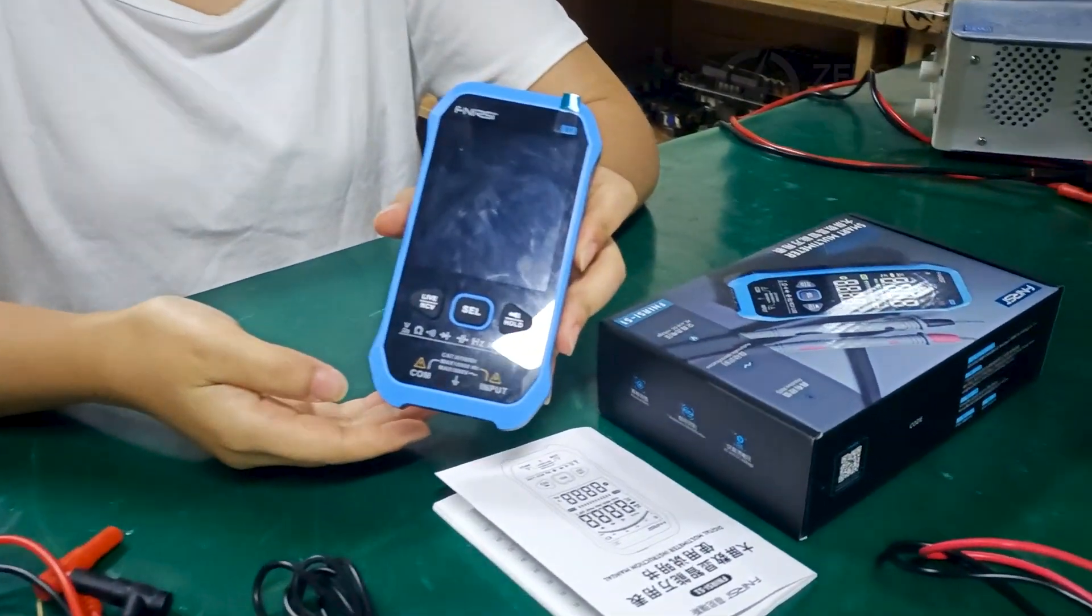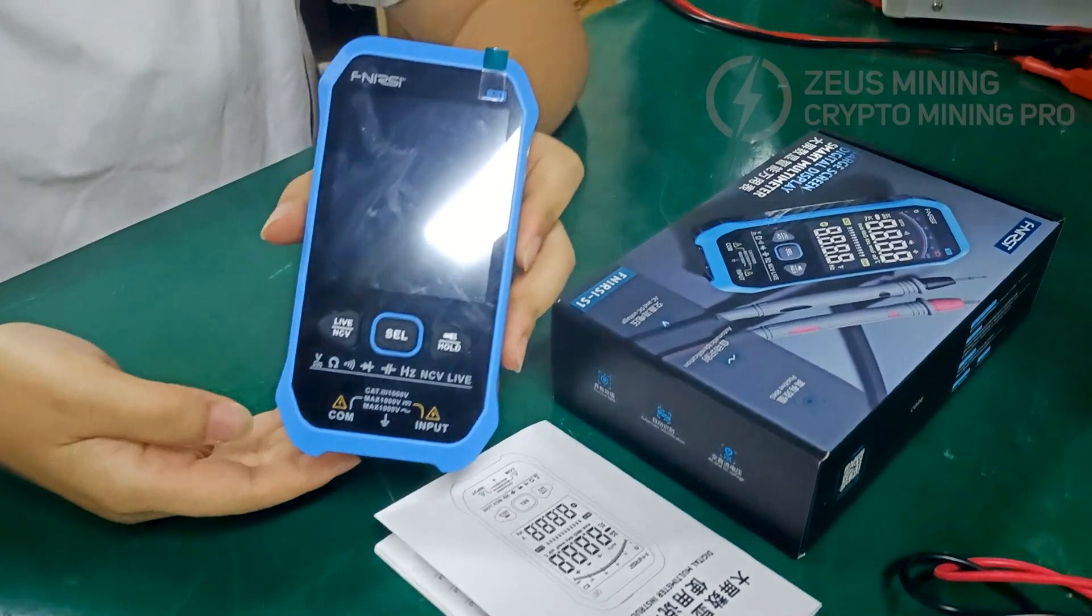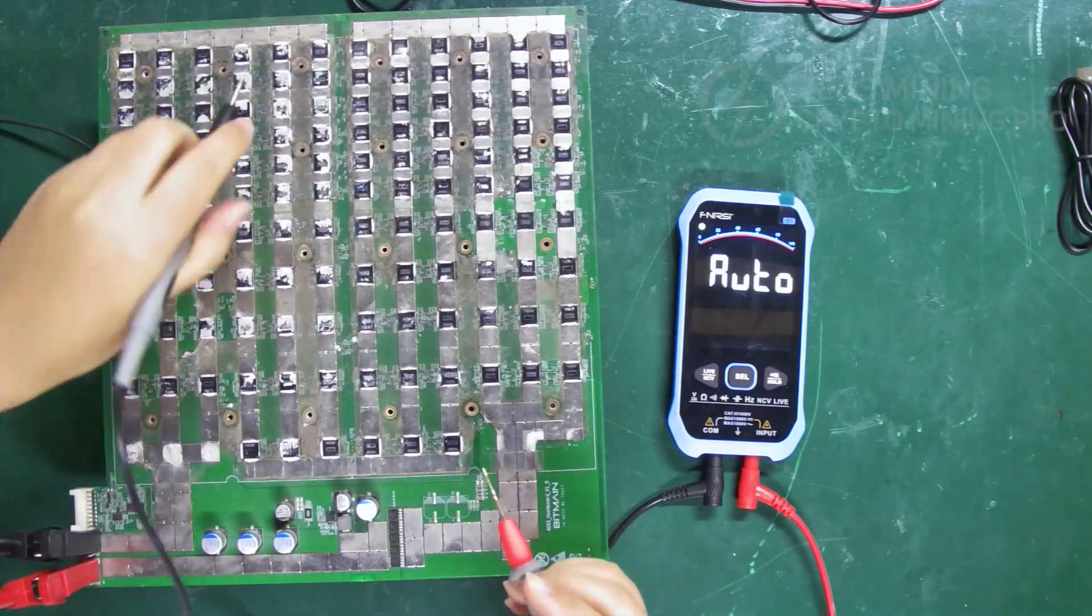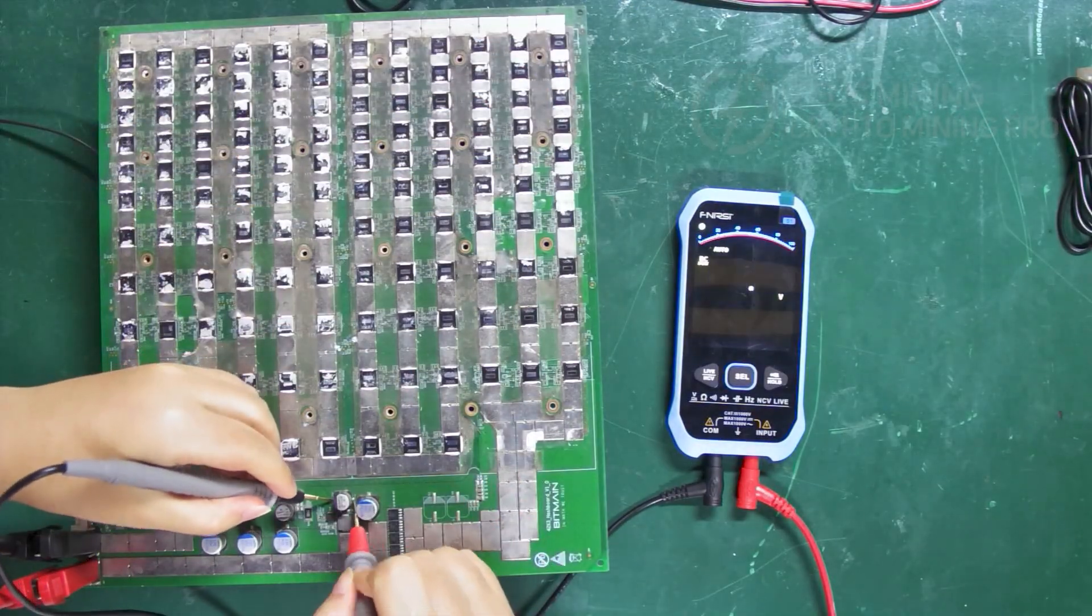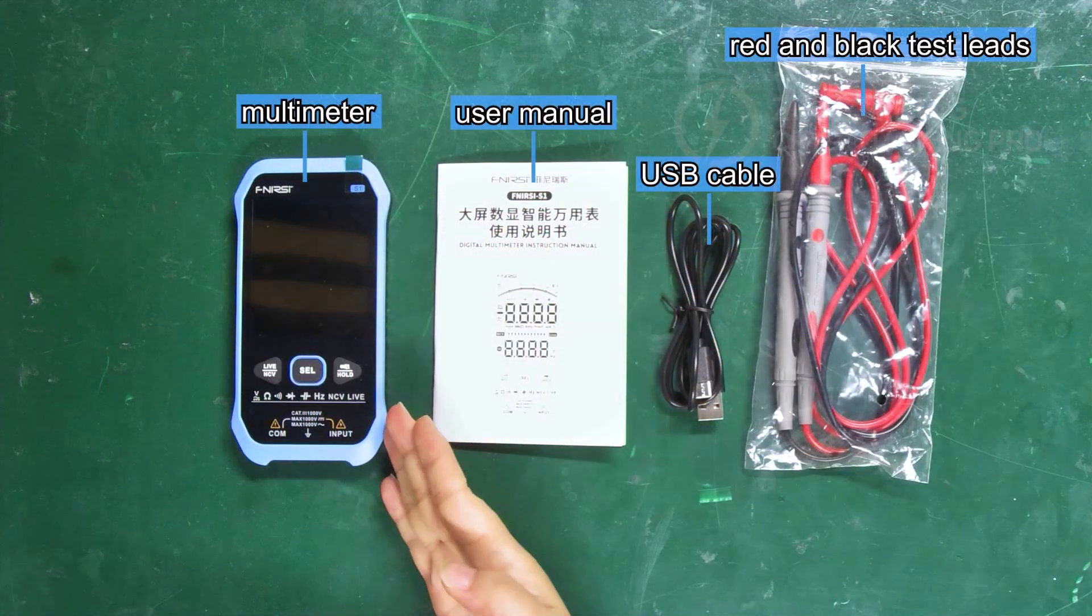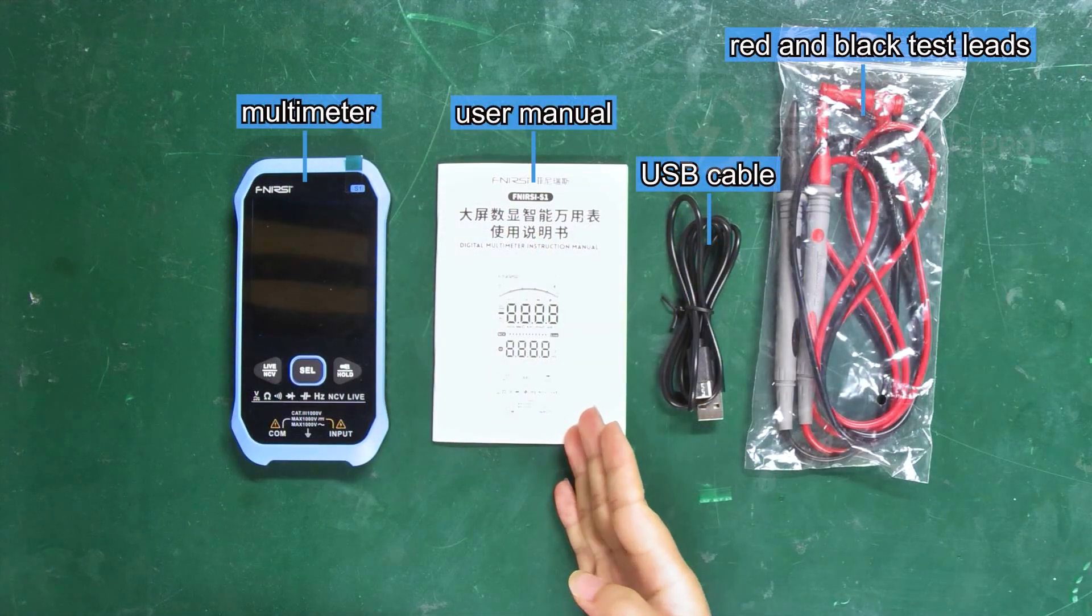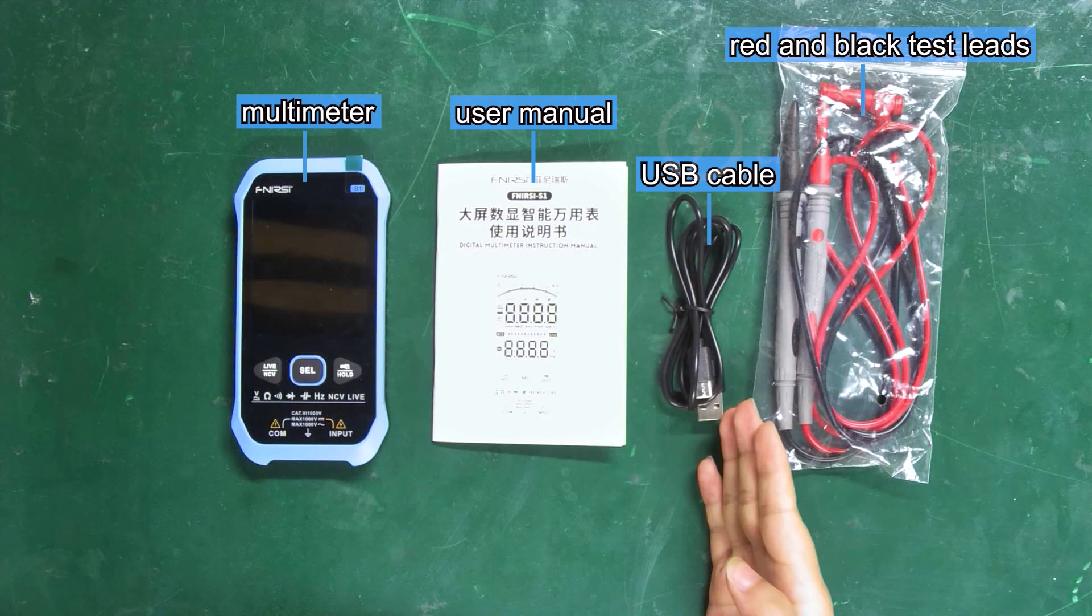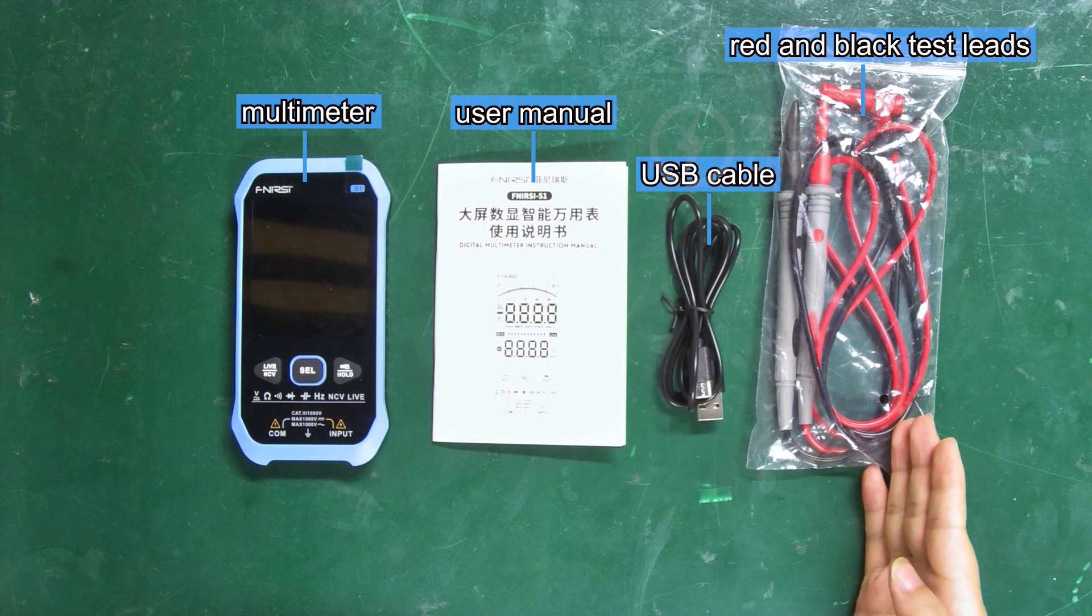Hi everyone, today I'm going to introduce this big screen digital display smart multimeter. It's perfect for both hash board detection and repair. Here we have the multimeter itself, the user manual, a USB cable, and the red and black test leads.